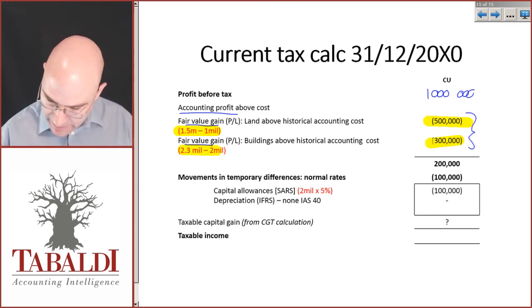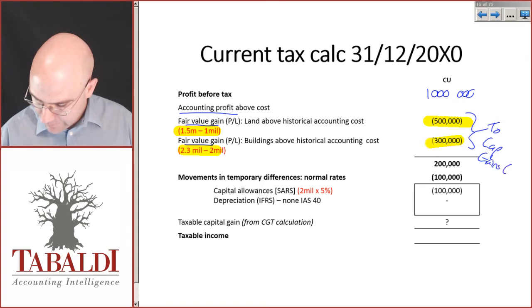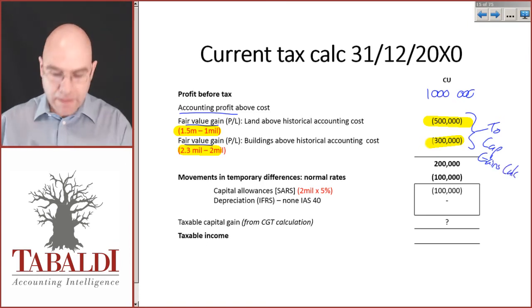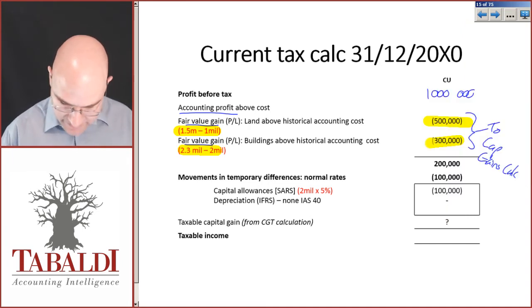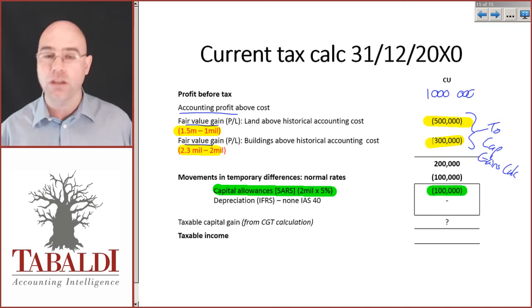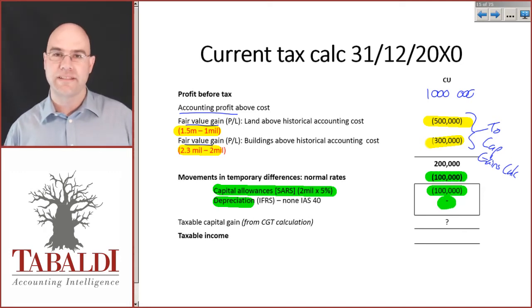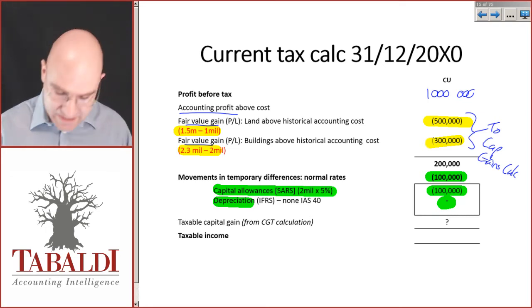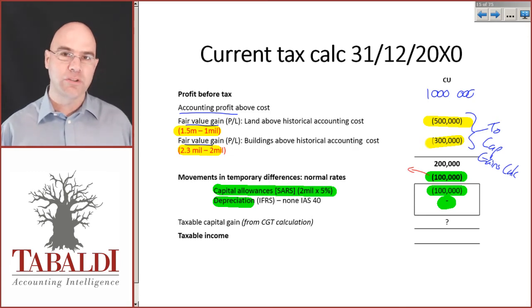The fair value gains go into the CGT calc. Now tick off the movements in temporary differences: I had a capital allowance of 2 million times 5% = 100,000. Nothing for depreciation because it's IAS 40. So I have a 100,000 movement in temporary difference. I've already done the journal for the 121,000, which was split: 28,000 for use rates and 93,000 for sale rates.